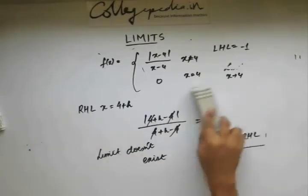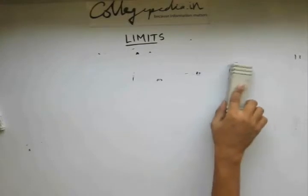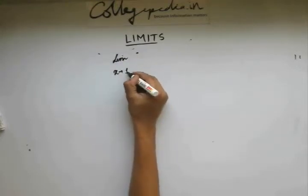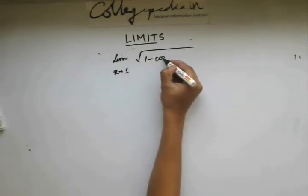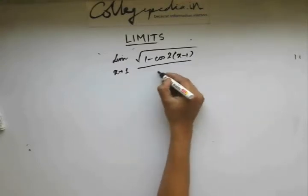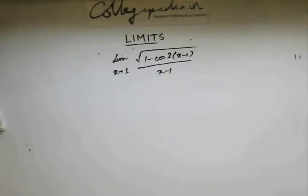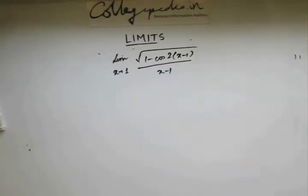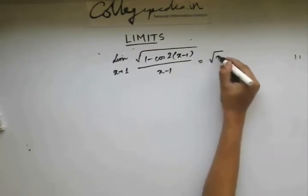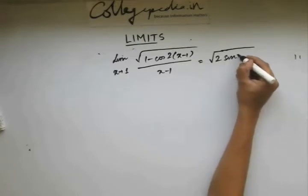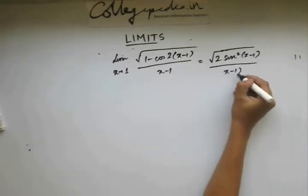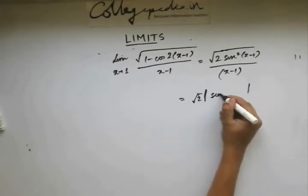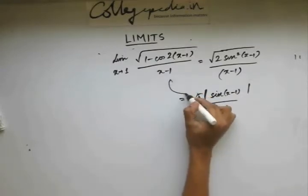Now let's take a question regarding existence of limits which was asked in IIT JEE in 1998. The question asks us to check for existence of limits for this expression. You see that it involves 1 − cos2θ, and you know 1 − cos2θ = 2sin²θ. So I can write the expression as √(2sin²x) / (x − 1), which simplifies to √2 · |sin x| / (x − 1).